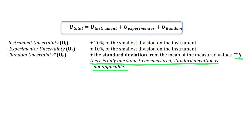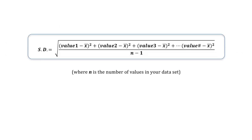It's important to realize that random uncertainty is only applicable if there are multiple data points to report. That is, if there's only one value to be measured, then standard deviation isn't applicable, and therefore there is no random uncertainty to consider for that measurement. When there are multiple measurements made and random uncertainty is something to consider, it might be helpful to understand what standard deviation actually is.